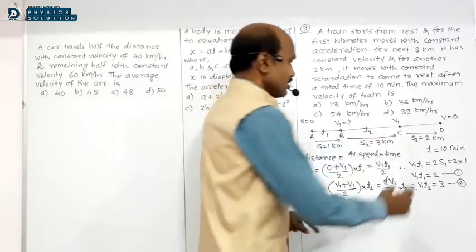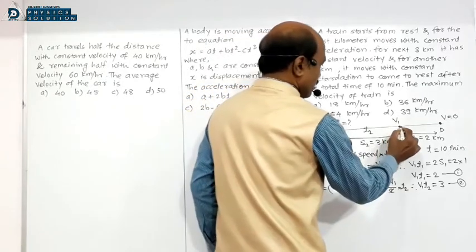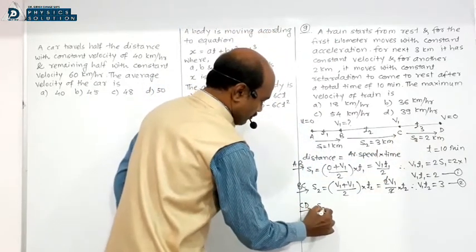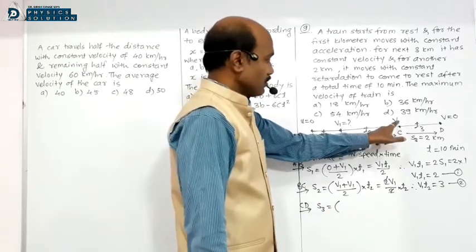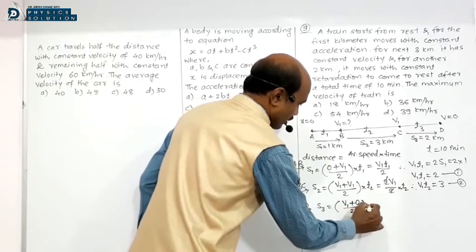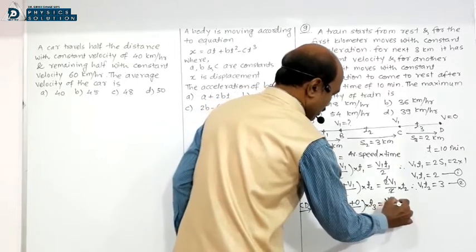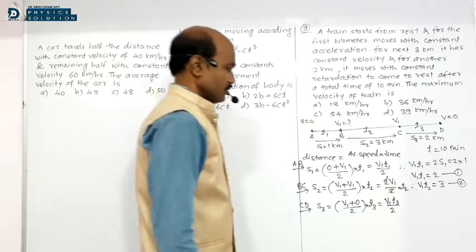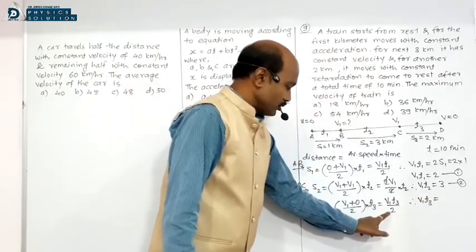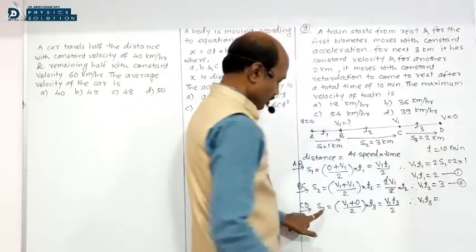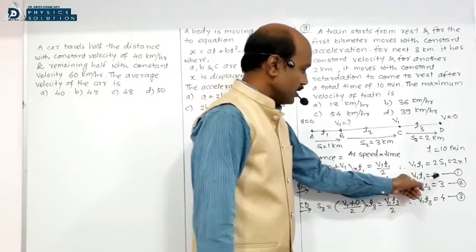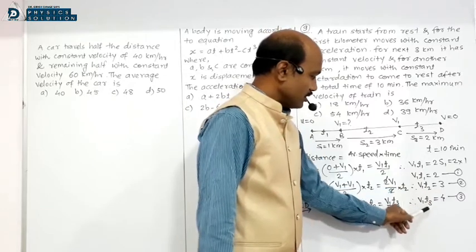For segment C to D: initial velocity V1, final velocity 0, so average speed is (V1 + 0)/2 = V1/2. Distance S3 = V1·T3/2, so V1·T3 = 2·S3 = 2×2 = 4. Let this be equation number 3.